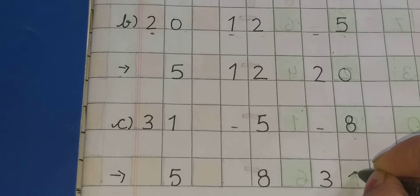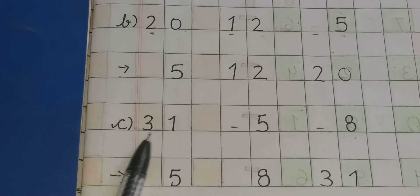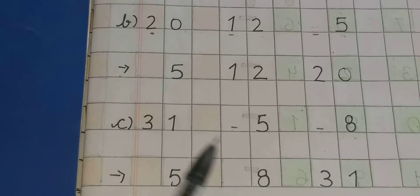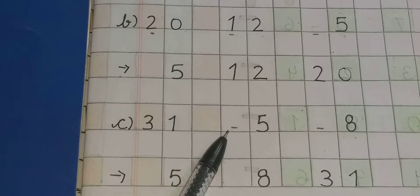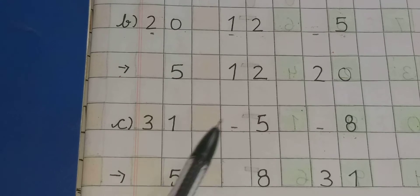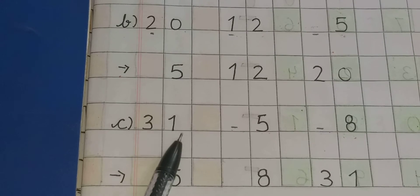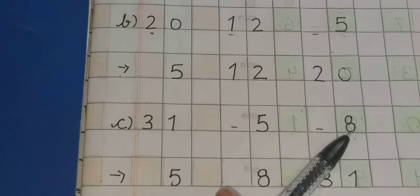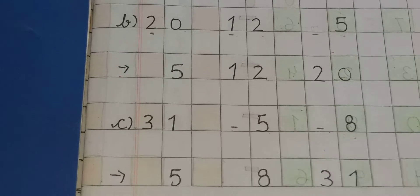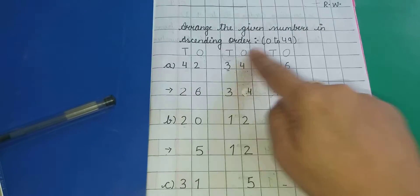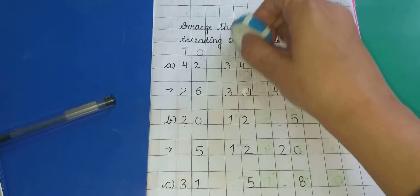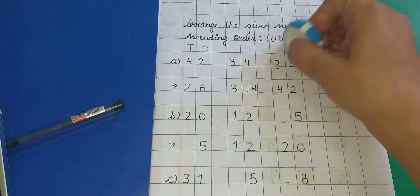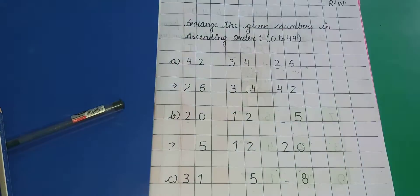अब आप कहेंगे, 3 तो 5 और 8 से छोटा है — number 3, 5 और 8 से छोटा है. But kids, आप देखेंगे: 3 जो है, वो tens के place पर है. और यहाँ tens के place पर कुछ भी नहीं है — यह two digit number है, और यह दोनों single digit numbers हैं. So kids, after work, आप यह T.O. erase कर देंगे, because यह आपकी help के लिए था, कि आप numbers को compare कर सकें.